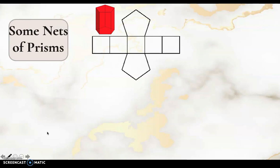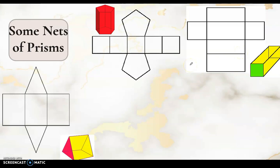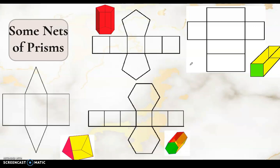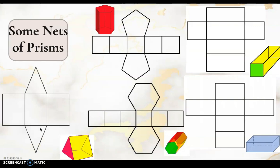Here are some nets and their 3D figures of prisms. We have a pentagonal prism because the base is a pentagon with five faces, a square prism, a triangular prism since the bases are triangles with three rectangular faces, a hexagonal prism, and a rectangular prism — and so many more names of prisms depending on its base.